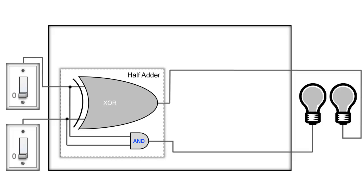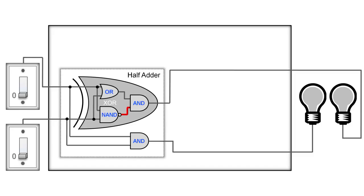Now what makes up this exclusive OR gate? Well, it's an OR gate, a NAND gate, and an AND gate. What's a NAND gate? That's just an AND gate with a NOT gate on the back end. A NOT gate just flips whatever the output is to its opposite. In other words, the NAND gate is only OFF if both inputs are ON — the exact opposite of the AND gate.